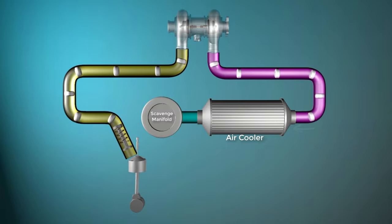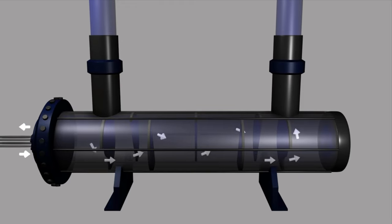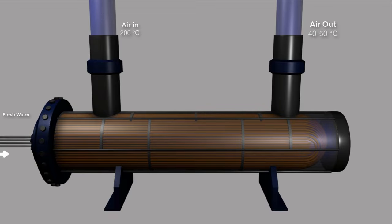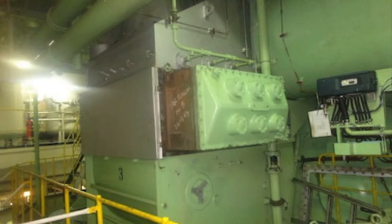The arrangement is a shell and tube type air cooler where sea water or fresh water is passed inside the tubes as a cooling agent to reduce air temperature.